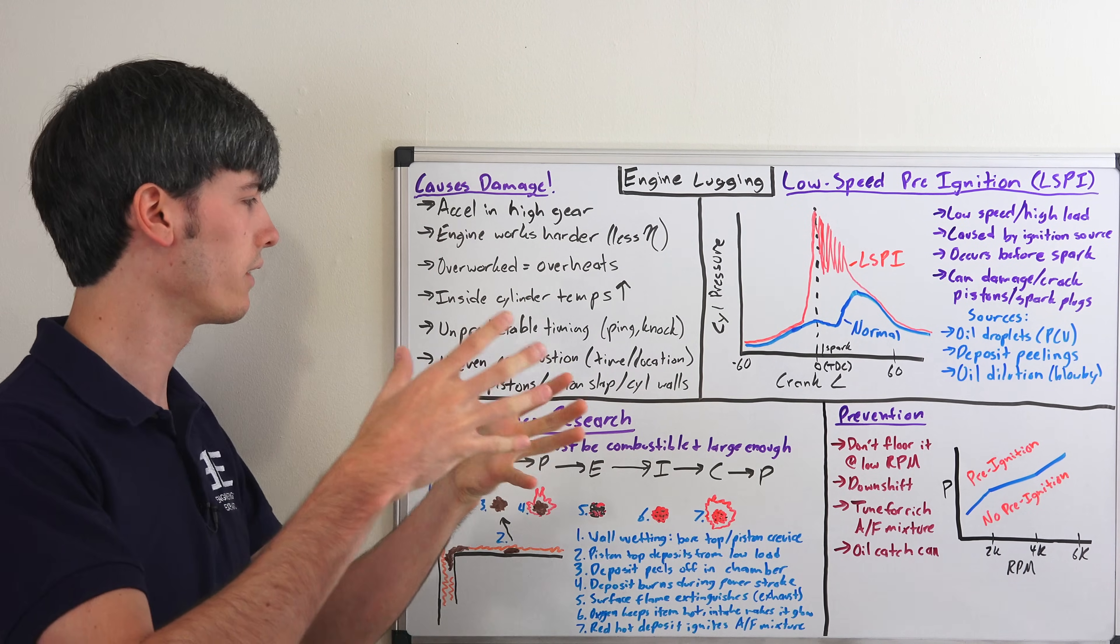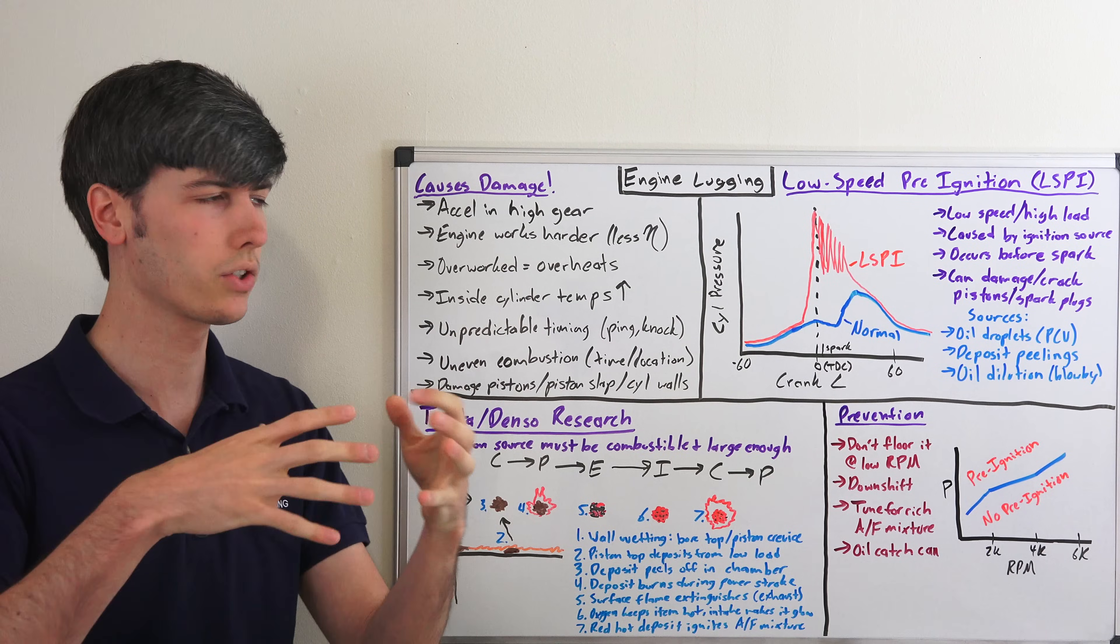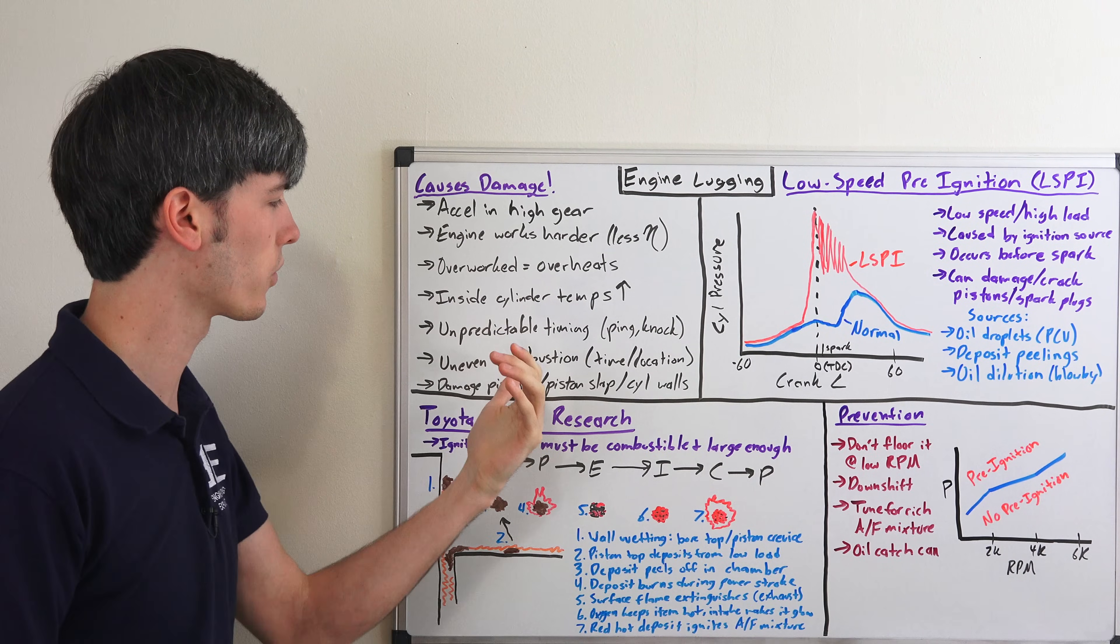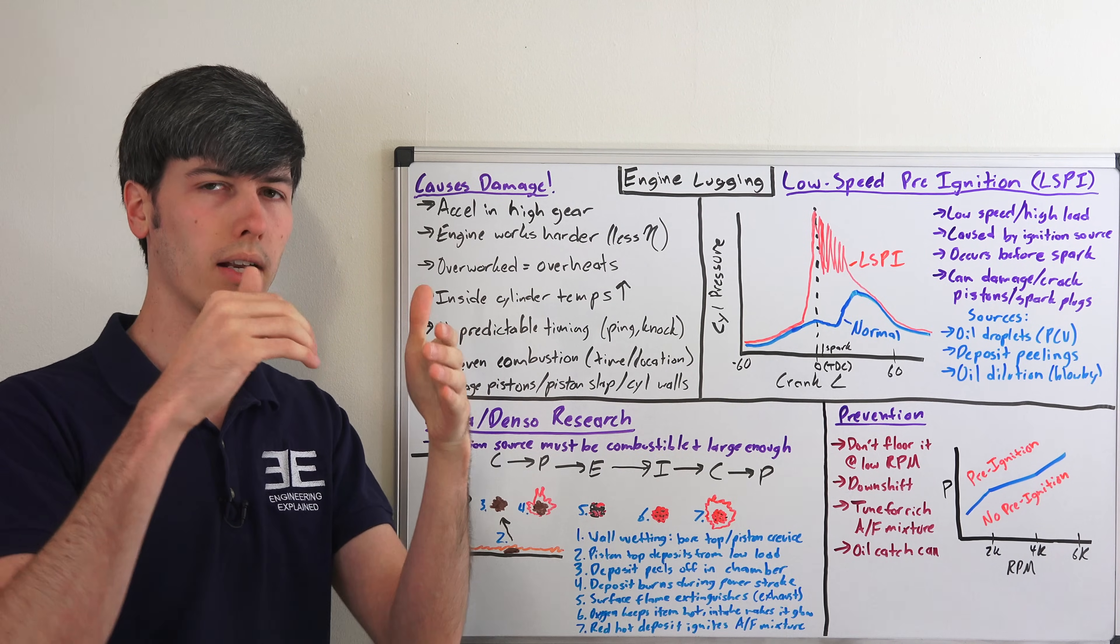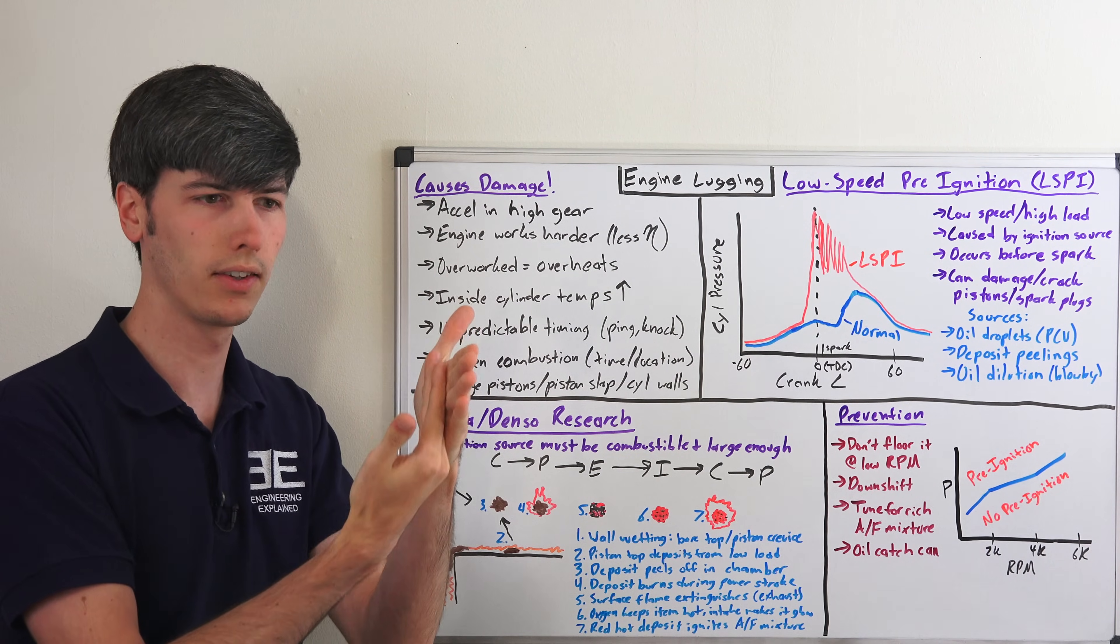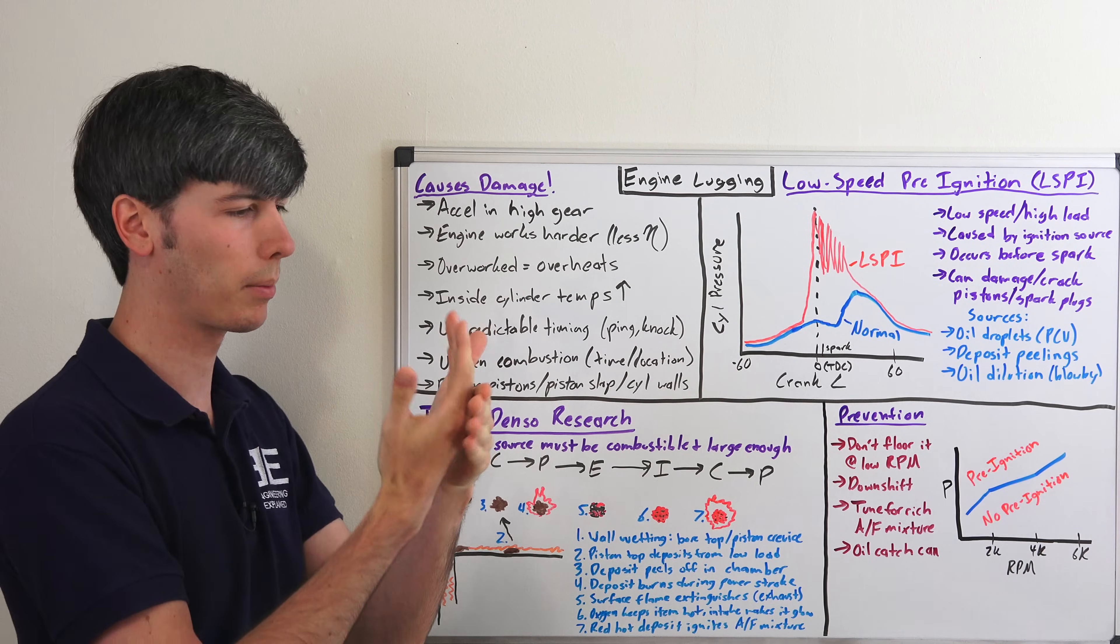If you have that uneven combustion occurring in different locations or at bad times, that can of course damage your piston. You can have piston slap. Let's say you have a pressure not where it's supposed to originate - that can force the piston up against the cylinder wall and you can start to scrape up your cylinder walls.